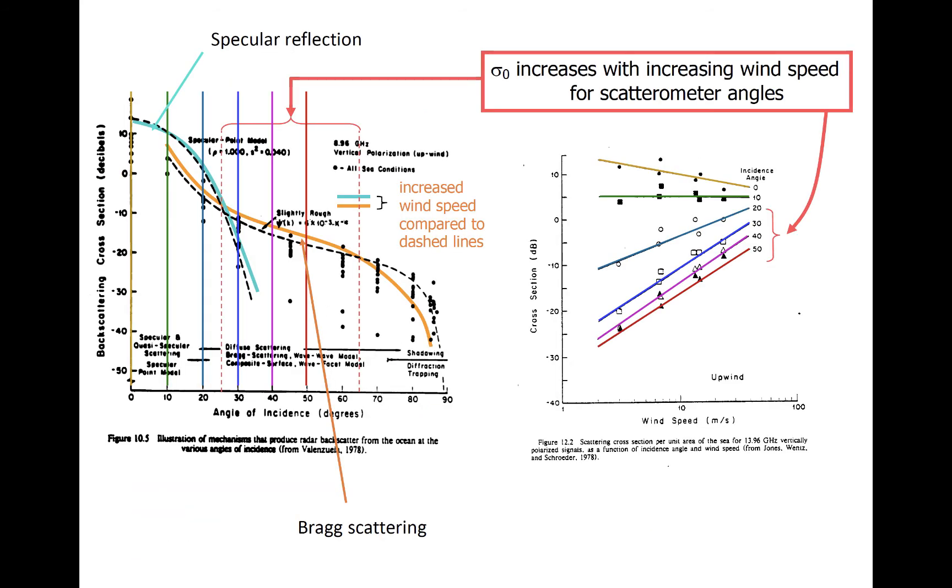Looking first at the panel on the left of this slide, at angles greater than about 25 to 30 degrees, to the right of the spread dashed line, and less than about 65 degrees, Bragg scattering causes an increase in the backscatter cross section as wind speed increases.